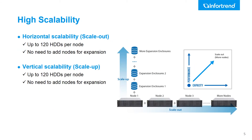For high scalability, EonStore CS supports scale-up and scale-out capabilities to provide a cost-effective expansion solution. You can start small with a single node and expand the cluster without any system downtime. To improve the overall performance, you can simply add another node into the cluster. For capacity expansion, you can just add JBODs into the existing nodes.